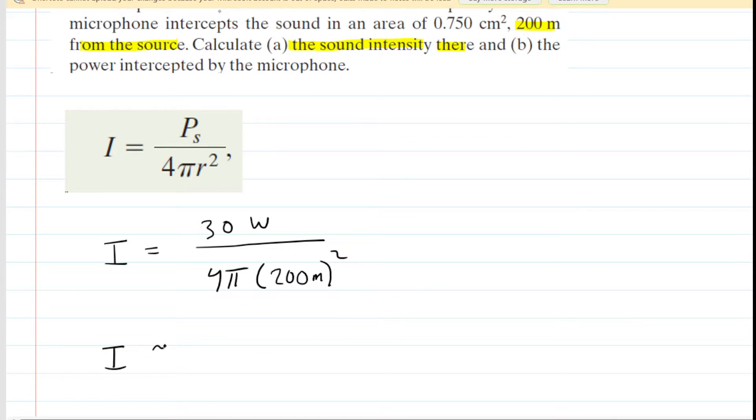we get an intensity of approximately 5.97 × 10^-5, and if we look carefully, we can see that we divided a watt by a meter squared, so our standard unit of intensity is watts per meter squared.